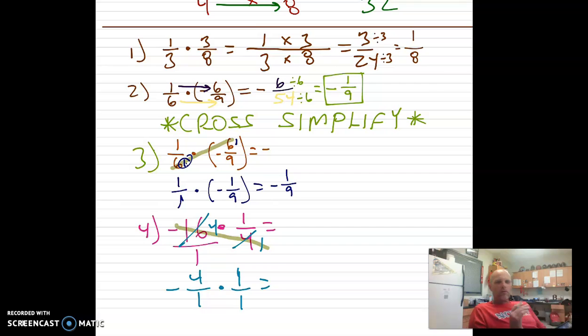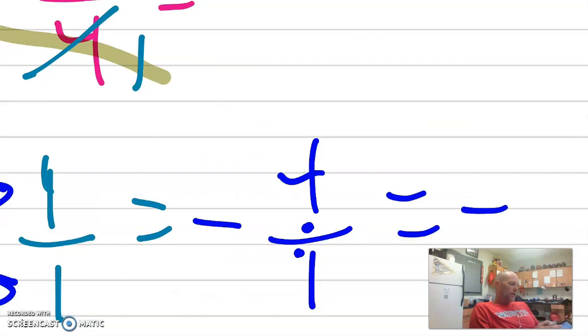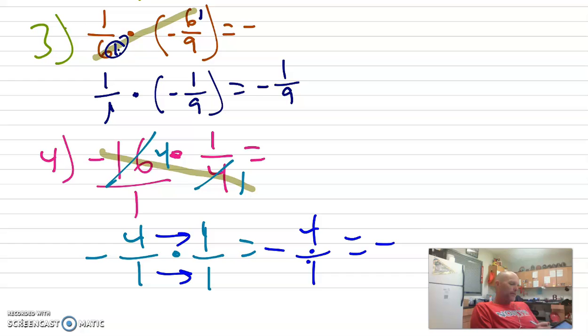It's easier. So now let's just multiply directly across. A negative times a positive is a negative. 4 times 1 is 4. And 1 times 1 is 1. Well, what do we end up with? We have a negative and 4. Don't forget this little fraction sign just means to divide. 4 divided by 1 is 4. So our answer is negative 4.